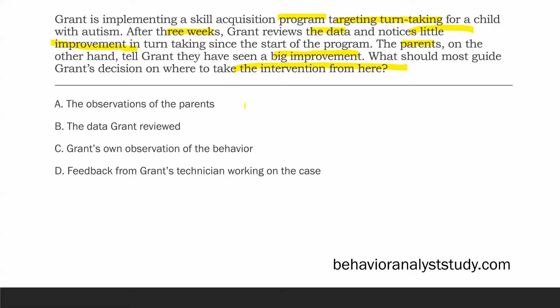Should Grant's decision be guided by A, the observations of the parents; B, the data Grant reviewed; C, Grant's own observation of the behavior; or D, feedback from Grant's technician? D is not going to make sense — the data being taken should be what we trust. C and A are both subjective observations. Grant, regardless of outside opinion, has to go with the data and think about how to improve his skill acquisition program. We always, always want to trust our data and use it to guide decision making.